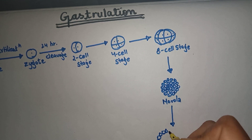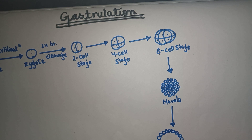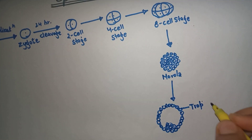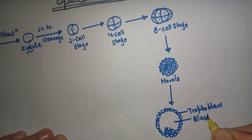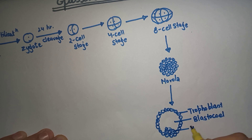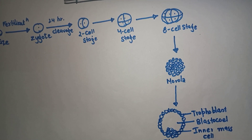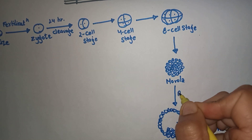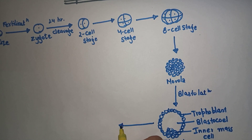This is the blastula. This outer layer is the trophoblast, and this is the inner cell mass. This cavity is known as the blastocoel. The blastula is formed by the process of blastulation. Further, the blastula is proceeded by early gastrula.